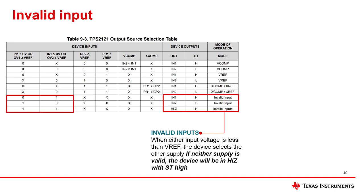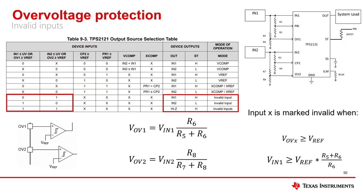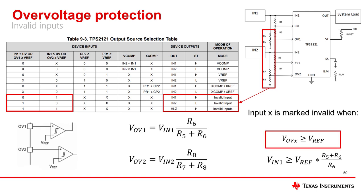The last section to cover in the TPS2121 datasheet is the mode where the device detects invalid inputs. Over-voltage pins are used to determine whether the input voltage is outside of a user-set value. To set this value, the over-voltage pins are tied to the input voltages through a voltage divider. Each over-voltage pin voltage is compared internally with a constant VREF. Once the node is greater than or equal to VREF, the input is marked invalid. To set the required resistor values for the desired over-voltage threshold, the following equation can be used. Over-voltage pins can additionally be externally triggered using an MCU to pull the pin high, manually triggering one or both supplies as invalid.